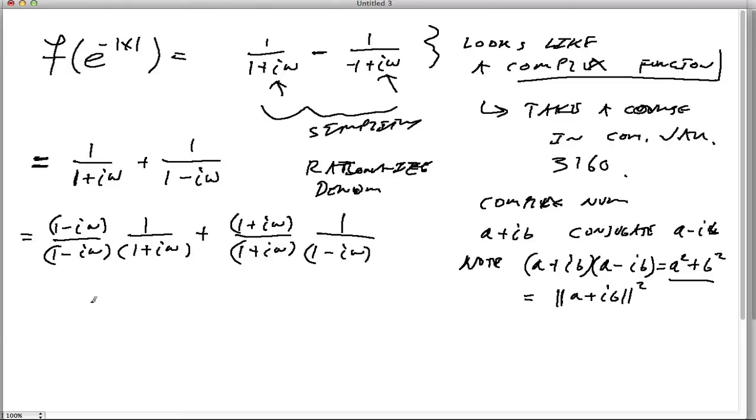Okay, now we see here we have a minus i omega and a plus i omega. Those cancel. So our result is simply 1 over 1 plus omega squared.